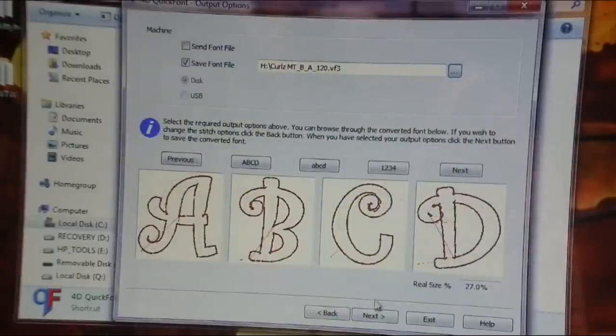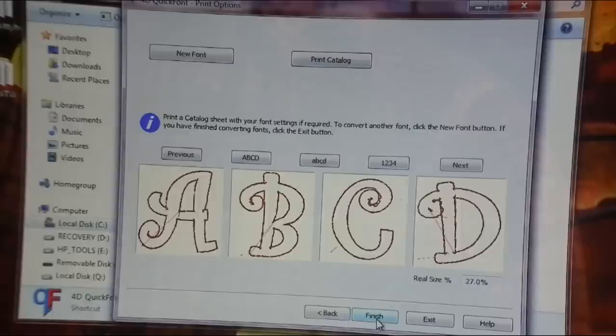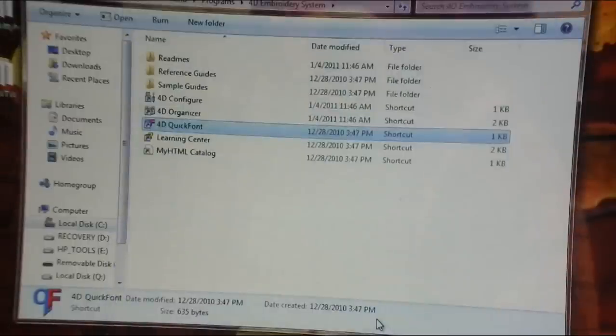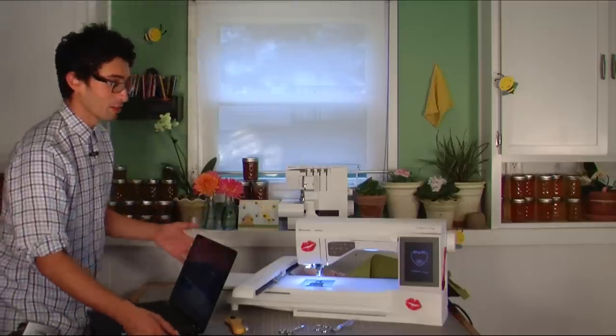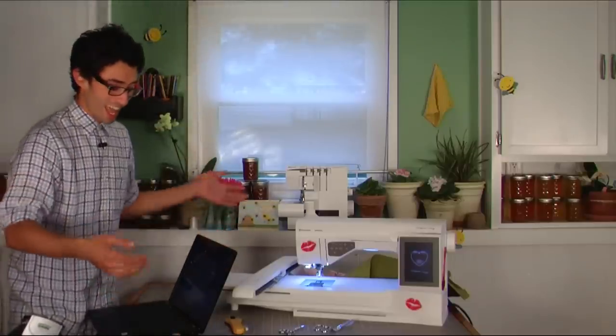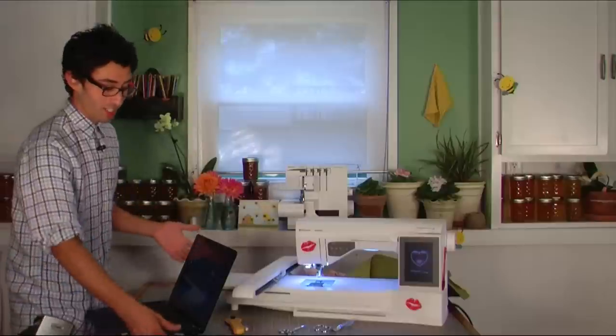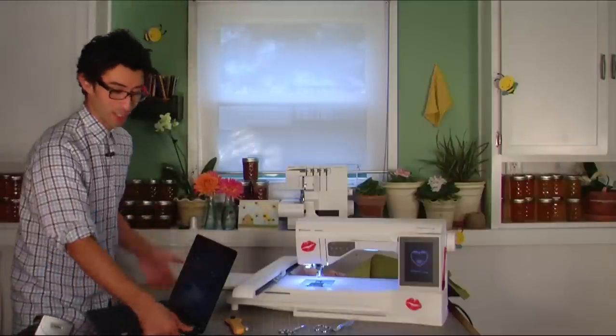Or you could even rename it right here if you wanted. I'm just going to go ahead and click save, and then click next and finish, and you're all done. So you've saved it to your memory stick, and what I'm going to do right now is go and get my Ruby in position and install the hoop and everything.